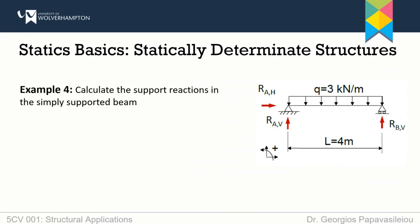Let us see another example. Again, a statically determinate structure. The main difference from the previous ones is that this structure has a uniformly distributed load. When it comes to UDLs, we calculate the resultant force — a force used to substitute the UDL for all calculations. We need to keep in mind that this resultant force is fictitious; it is not actually there.